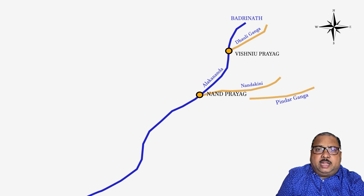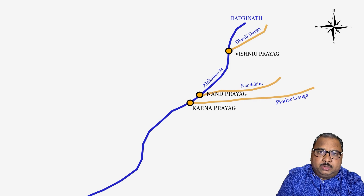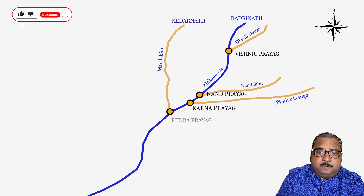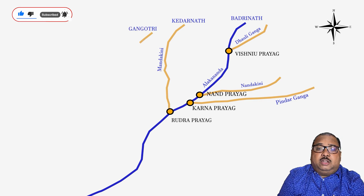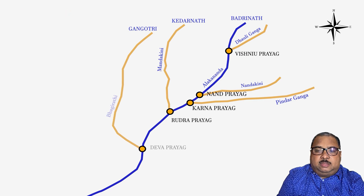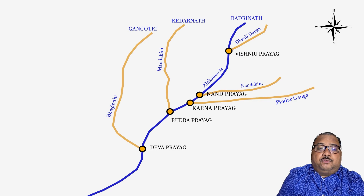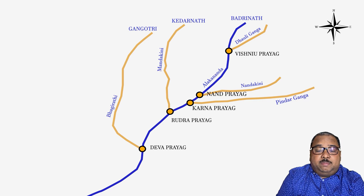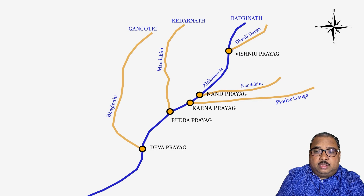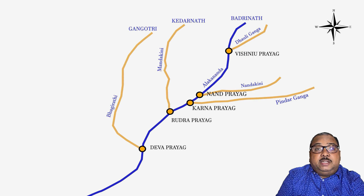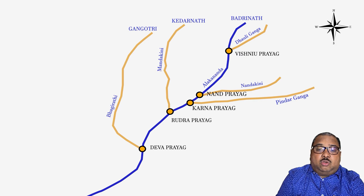The first Prayag is Vishnu Prayag, where river Dholi Ganga meets Alaknanda. At Nanda Prayag, the river Nandakini meets Alaknanda. At Karnaprayag, Alaknanda merges with Pindar river. At Rudra Prayag, Alaknanda river meets Mandakini river. The river Mandakini is also a mighty river that originates at the foothills of holy Kedarnath.